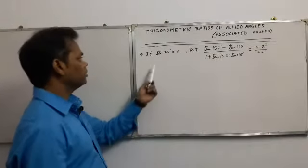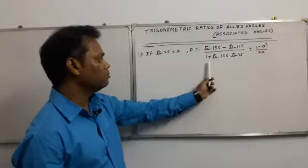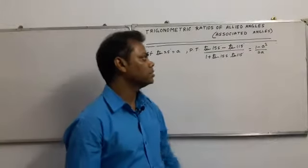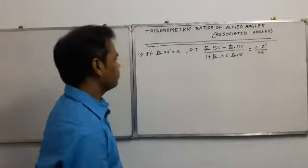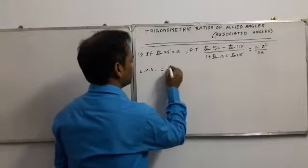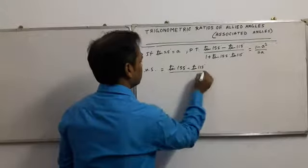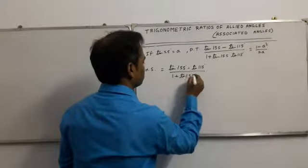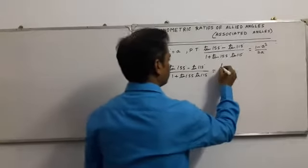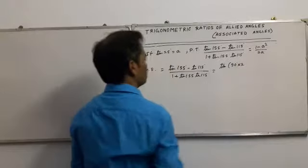First sum: if tan 25° = a, then prove that (tan 155° - tan 115°) / (1 + tan 155° · tan 115°) = (1 - a²) / 2a. LHS equals tan 155° minus tan 115°, divided by 1 plus tan 155° · tan 115°. tan 155° can be written as tan(90° × 2 - 25°).